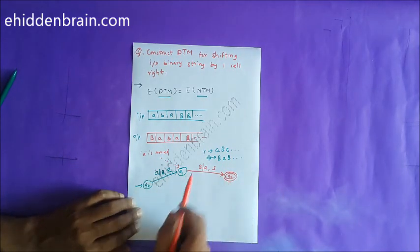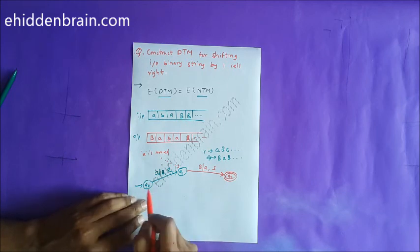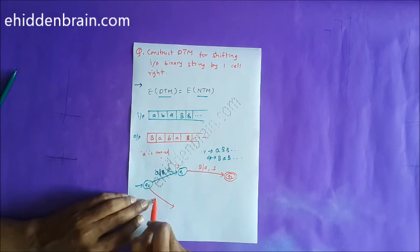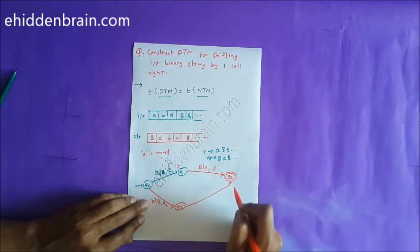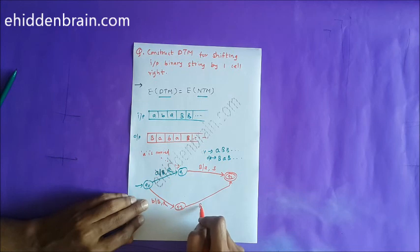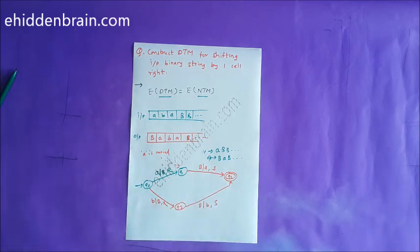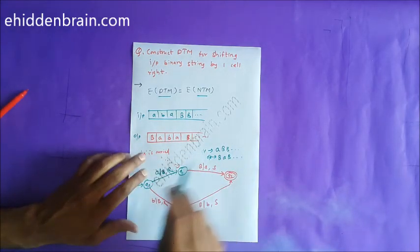Similarly, if we get 'b' as input on q0, we replace 'b' with blank (B), move to the right, and go to state q3. On q3, when we reach the next blank (B), we replace it with small 'b' and stop — reaching the halt/acceptance state. This handles the single symbol 'b' case.